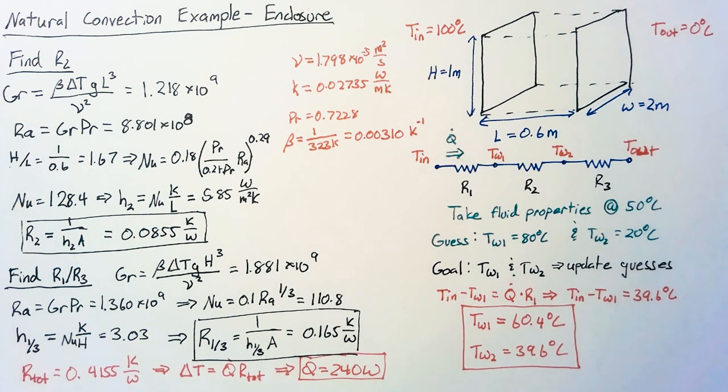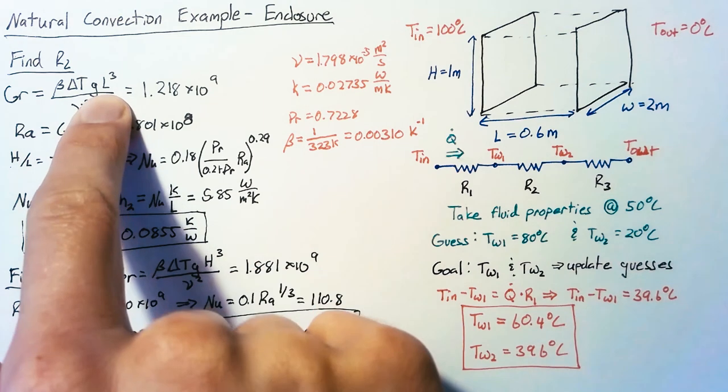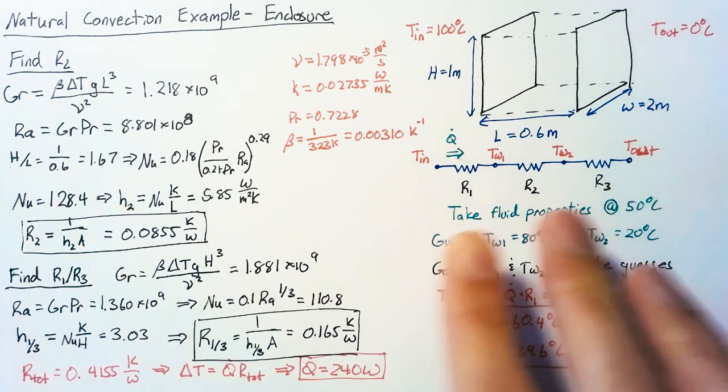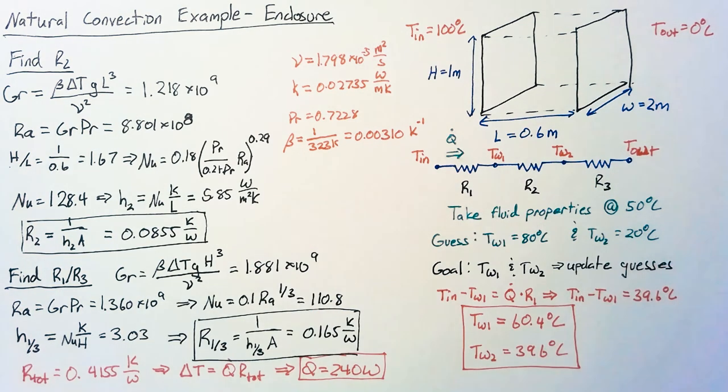So I hope this gave you a feel both for how to tackle some of these more complicated problems that require some iteration and also showed you just how we approach the enclosure. Pretty much all of it's the same, it's just we need to be careful about what our characteristic length is and make sure that we're keeping track of the delta T values that we're using. In any case, I hope this was useful and I'll catch you next time.